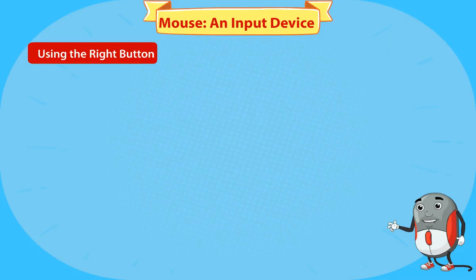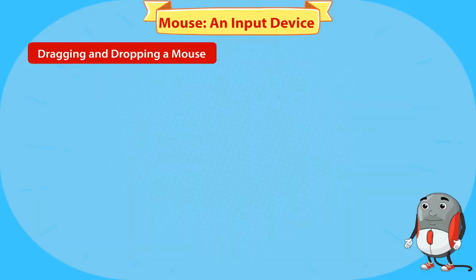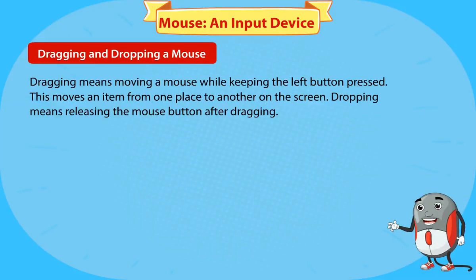A set of options appears on clicking the right button once. Dragging means moving a mouse while keeping the left button pressed, which moves an item from one place to another on the screen. Dropping means releasing the mouse button after dragging.